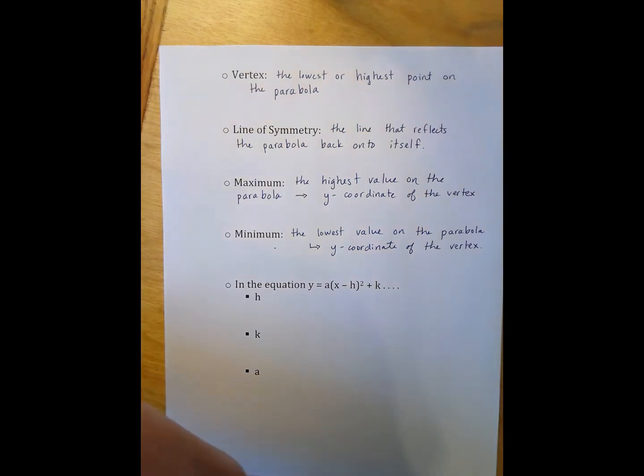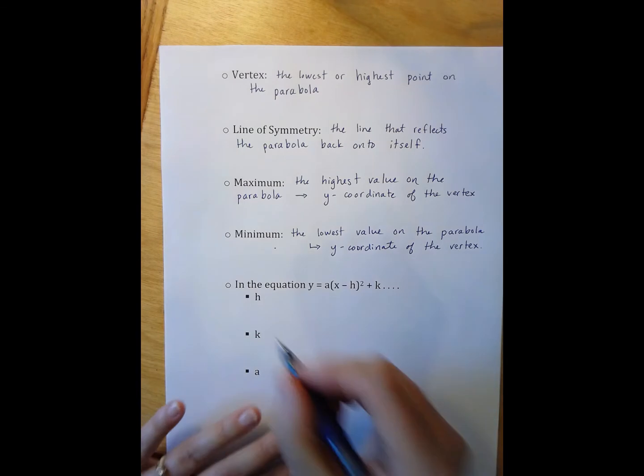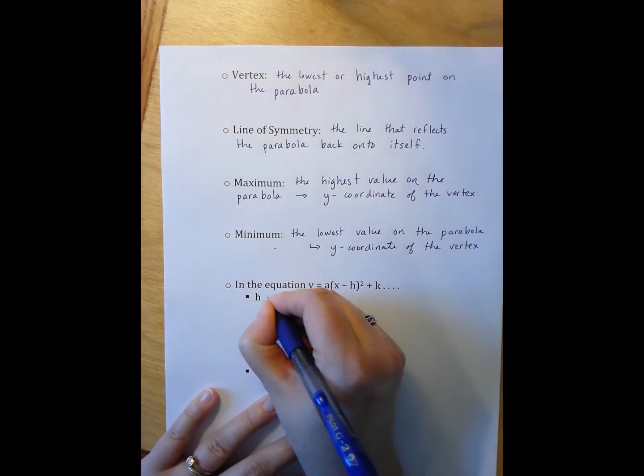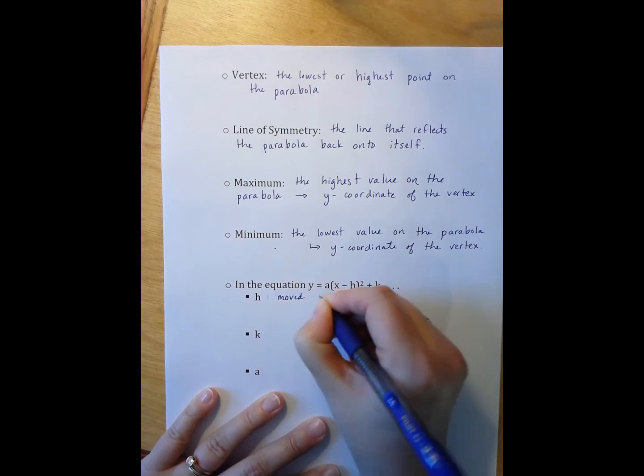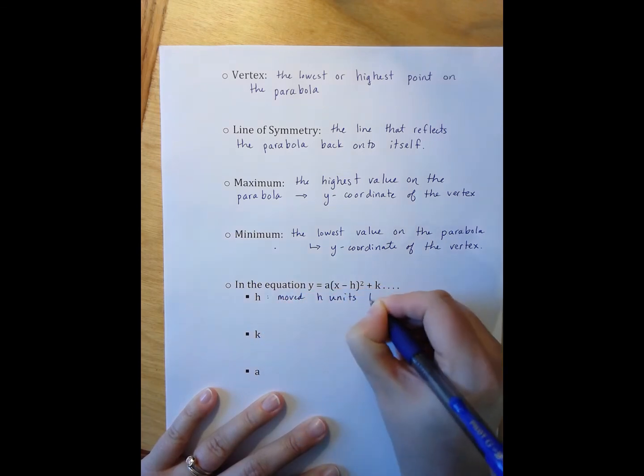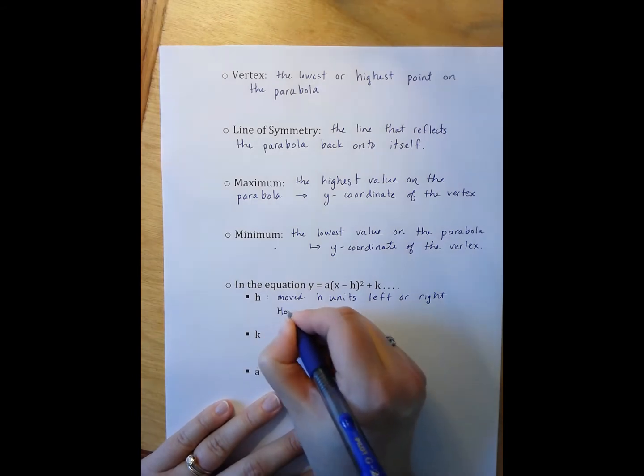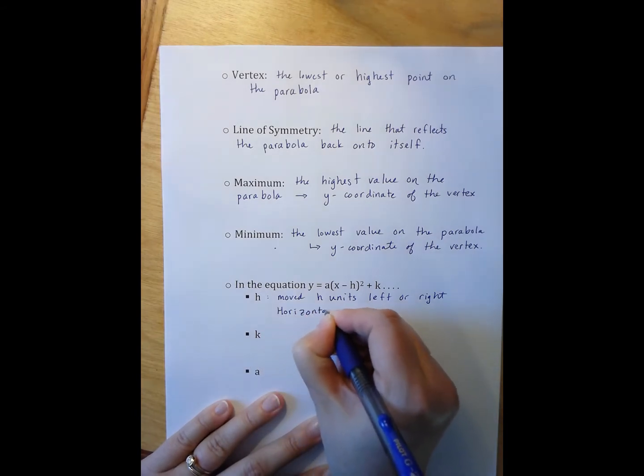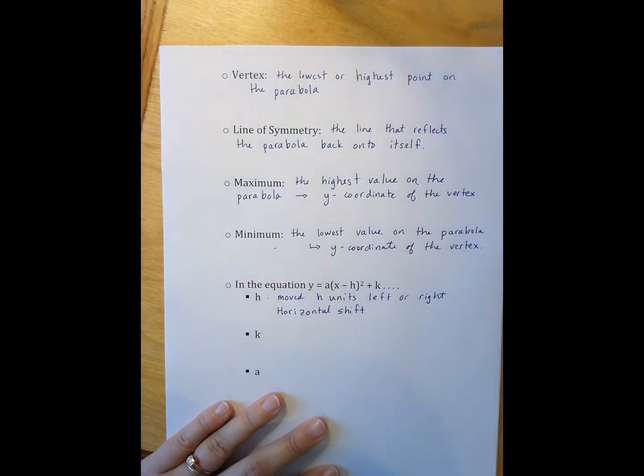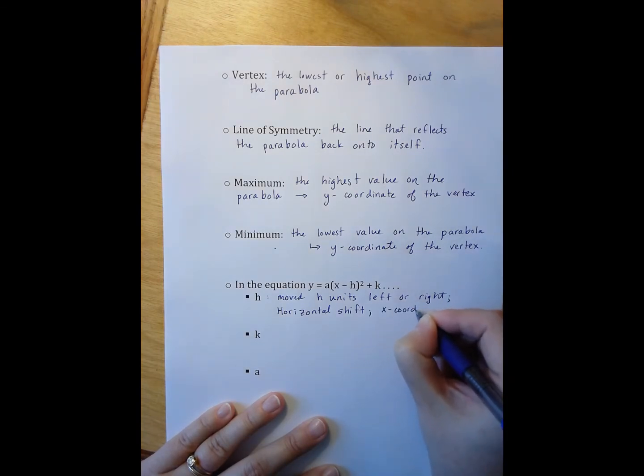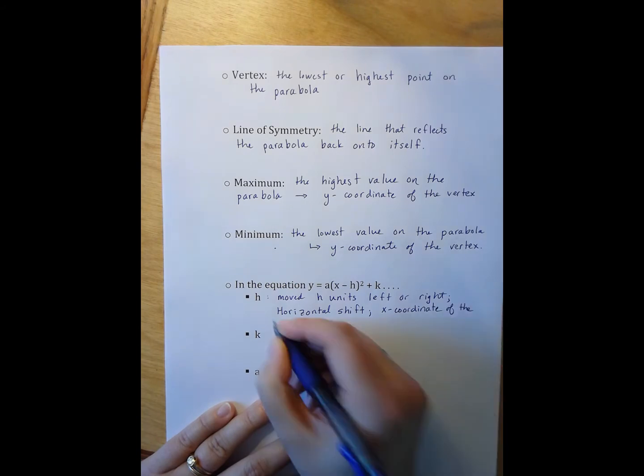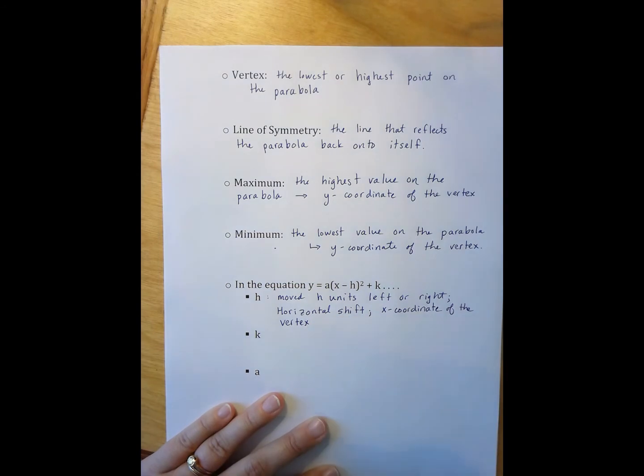So each of these letters represent either a vertical horizontal shift, a dilation, a stretching, or a reflection. So the h represents that the parabola has moved h units left or right, meaning the horizontal shift. It also means that it is the x-coordinate of the vertex. So it plays several different roles.